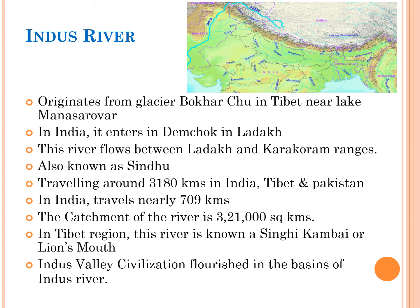The Sindhu river system is one of the world's and Indian subcontinent's most fertile regions. This river passes through three countries: Pakistan, India and China's Tibetan areas. Overall it travels around 3,180 kilometers across India, Tibet and Pakistan, and only within India this river travels nearly 709 kilometers.